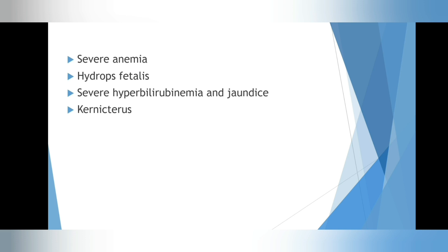Next is severe hyperbilirubinemia and jaundice. As red blood cells are broken down, a substance called bilirubin is formed. Usually the liver handles the clearing of bilirubin, but the baby's liver is unable to handle the large amount of bilirubin that results from the breakdown of red blood cells. This leads to a build-up of bilirubin in the blood and other tissues — bilirubin is a yellow pigment, and this causes yellowing of the baby's skin and eyes, which is what we refer to as jaundice.